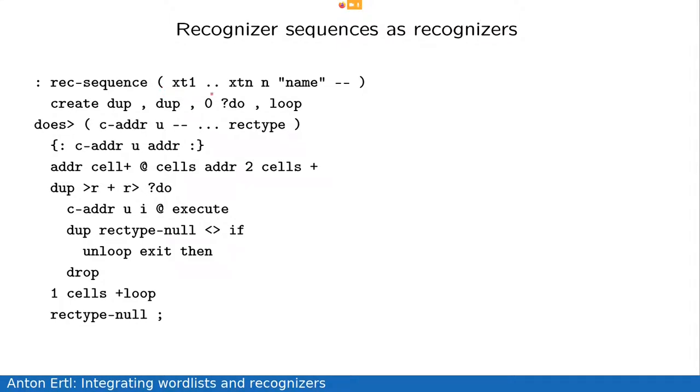So, here's the definition of a recognizer sequence. We have one, we pass n recognizers and their number to this defining word rec-sequence. And it does the usual create-does thing. So, in the creation part, it stores the maximum capacity, it stores the current capacity, and it stores the individual recognizers.